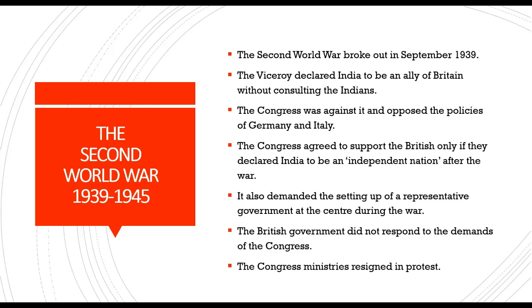In the annual session of the Congress held at Ramgarh in March 1940, the Congress offered to cooperate with the British government if it set up a provisional government at the center. This is the end of today's video.